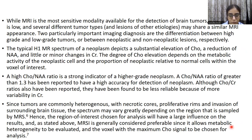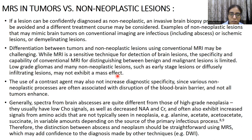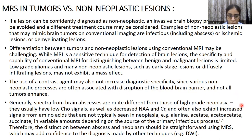MRSI is generally considered preferable since it allows metabolic heterogeneity to be evaluated. The role of MRSI in differentiating tumor versus non-neoplastic lesions is of immense importance — if a lesion can be confidently diagnosed as non-neoplastic, invasive brain biopsy procedures can be avoided. This differentiation is very difficult using conventional MRI techniques, and the use of contrast agents is not sufficient since not all tumors enhance. Spectra from brain abscesses are very different from those of high-grade neoplasms: brain abscesses will usually have low choline signals, decreased NAA and creatinine, and exhibit increased signals from amino acids not seen in neoplasms, such as alanine, acetate, acetoacetate, and succinate.